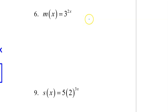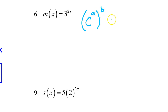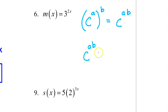Number 6 introduces a different property of exponents. We know that if we have c to the a power and then raise that whole thing to the b power, when you have a power raised to another power, you multiply those exponents — giving c to the a·b power. This property is reversible: if the exponent is a product, we can rewrite it as a power raised to a power.